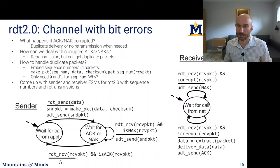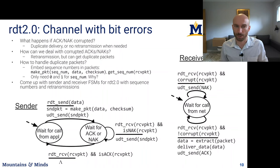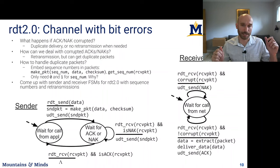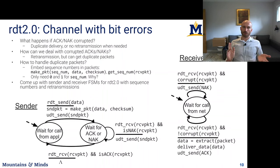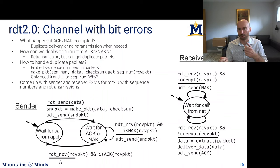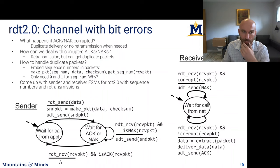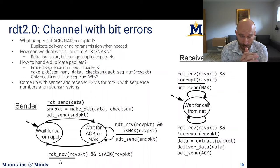It turns out we only need zeros and ones for sequence numbers in this protocol. The reason is that this is a stop-and-wait protocol — we send a packet, get an acknowledgement, then send the next packet, then get an acknowledgement. In this stop-and-wait protocol, we really only need zero and one to determine if a packet is this packet or the other packet. Once we move to the next packet, there's just one other packet behind it, and we can always distinguish between them using ones and zeros.